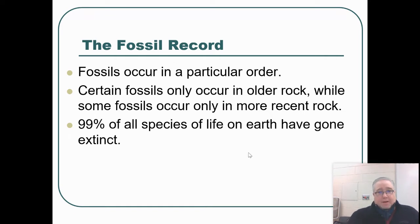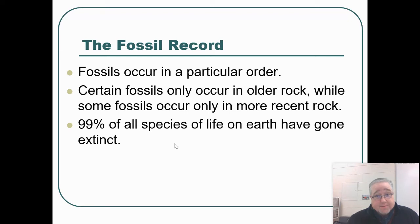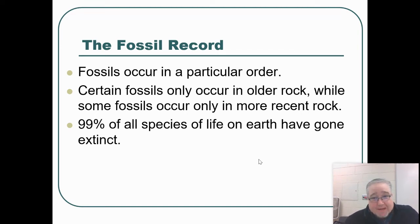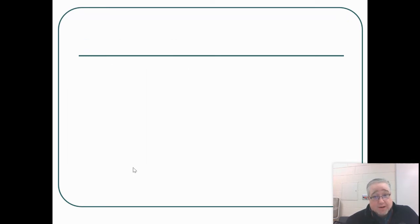One of the things we've learned from the fossil record is that most of the things we have found fossils of are extinct organisms. In fact, 99% of all the species of life on Earth have gone extinct — that's what the fossil record has told us. There are not very many fossils out there of organisms that are currently walking the planet today.